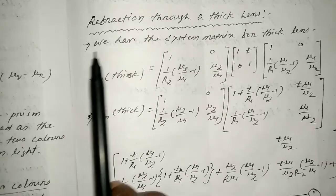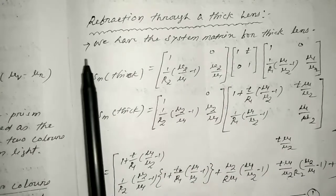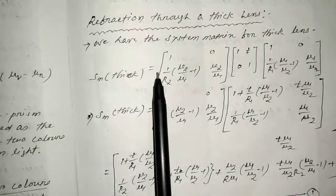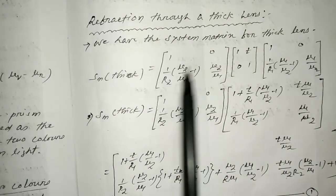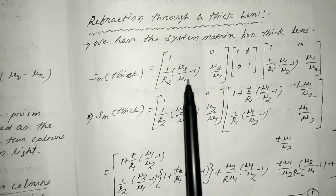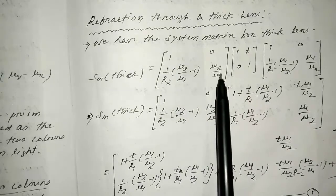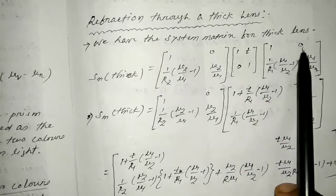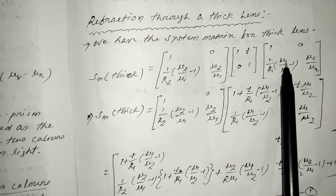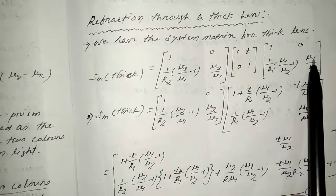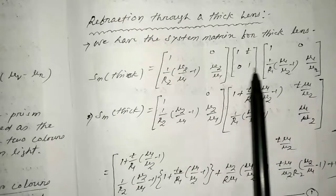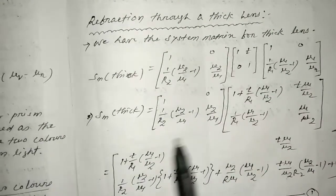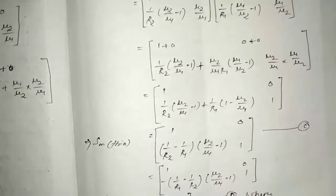So, we will see refraction and thick lens. We have the system matrix for thick lens: SM_thick equals the matrix [1, 0; (1/R2)(Nu2/Nu1 - 1), Nu2/Nu1] multiplied by the [1, T; 0, 1] translation matrix, multiplied by [1, 0; (1/R1)(Nu1/Nu2 - 1), Nu1/Nu2]. The system matrix for thick lens was derived in the previous video.